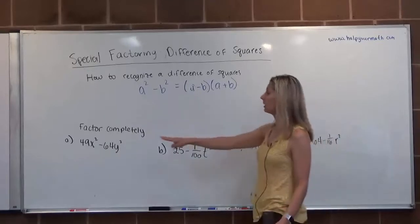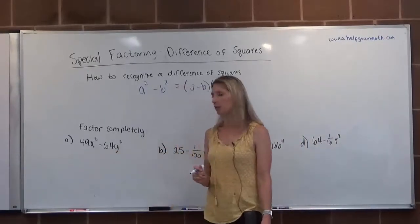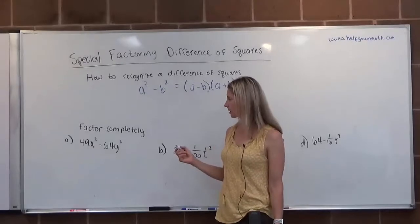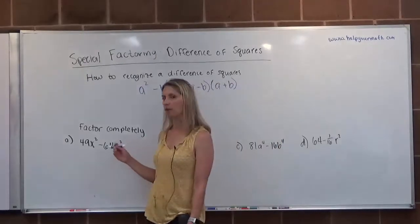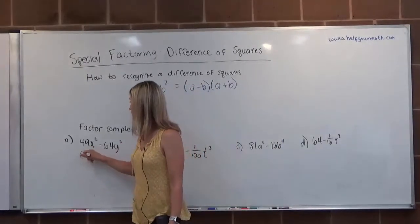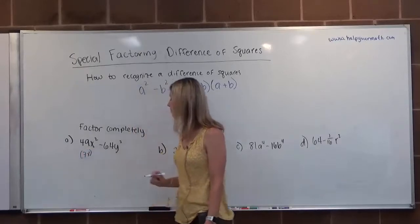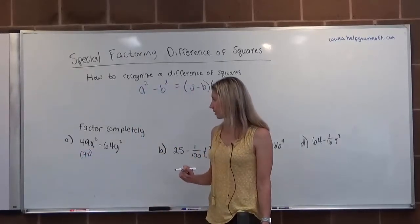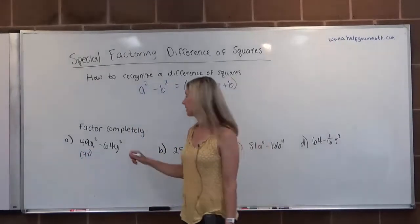In our first example, 49x squared minus 64y squared. We want to factor this completely. So is 49x squared a perfect square? Yes, it is. Its root is 7x. 64y squared is a perfect square, and its root is 8y.